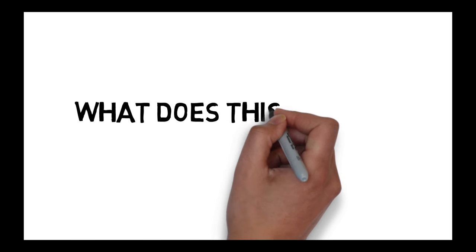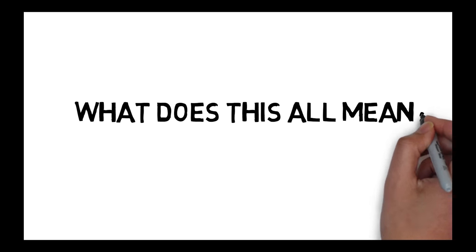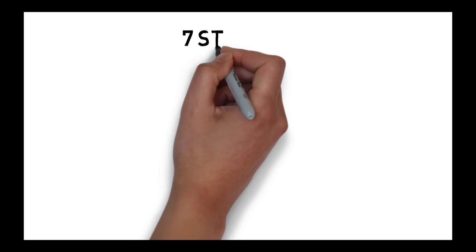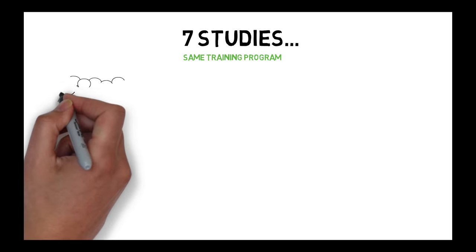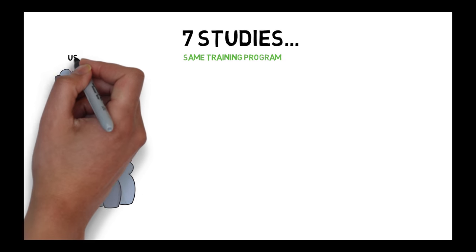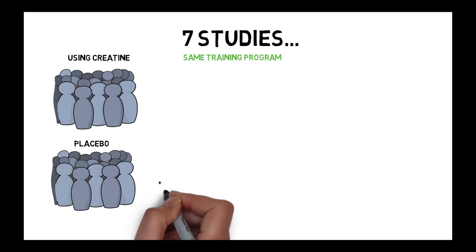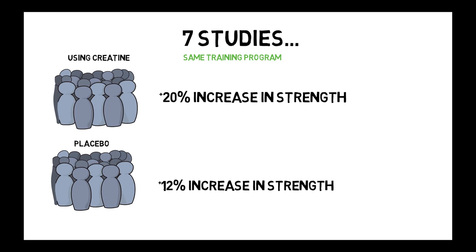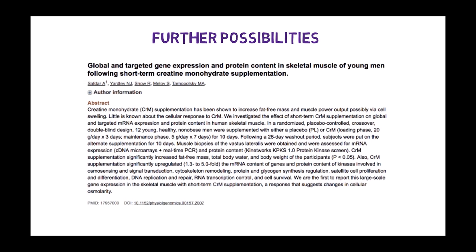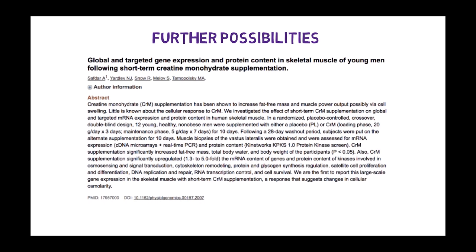This leads to the real-world implications of creatine supplementation. A meta-analysis found that groups doing a strength training program without creatine noted a 12% increase in strength, while the groups using creatine and doing the same program had a 20% increase in strength typically. There is also some research which suggests that the cell volumizing effects can promote a faster rate of muscle growth by upregulating certain genes associated with muscle growth.